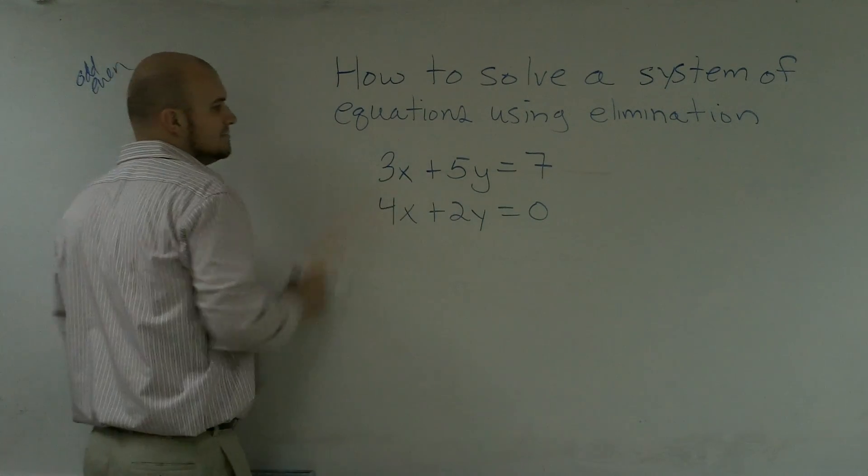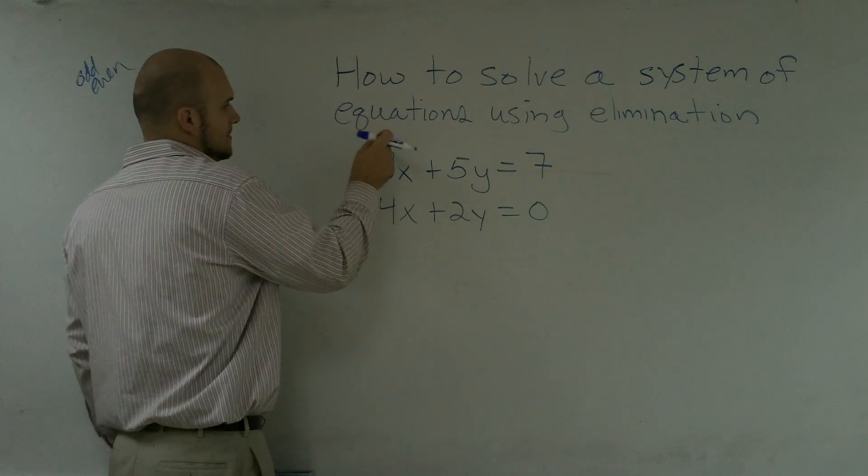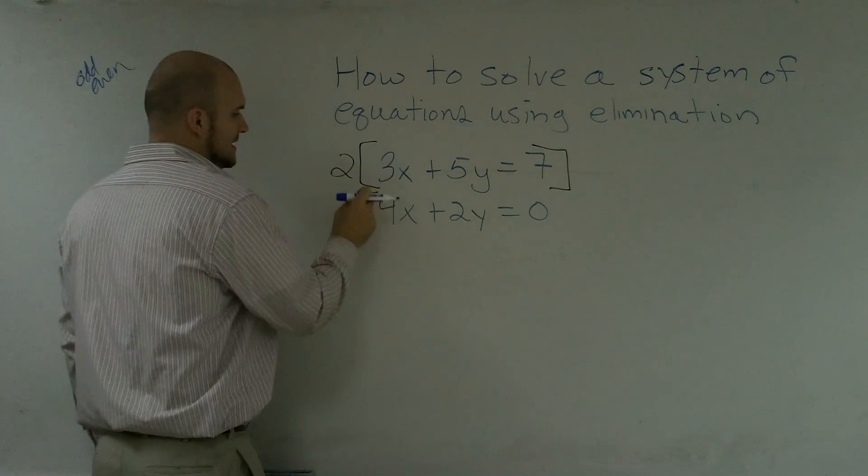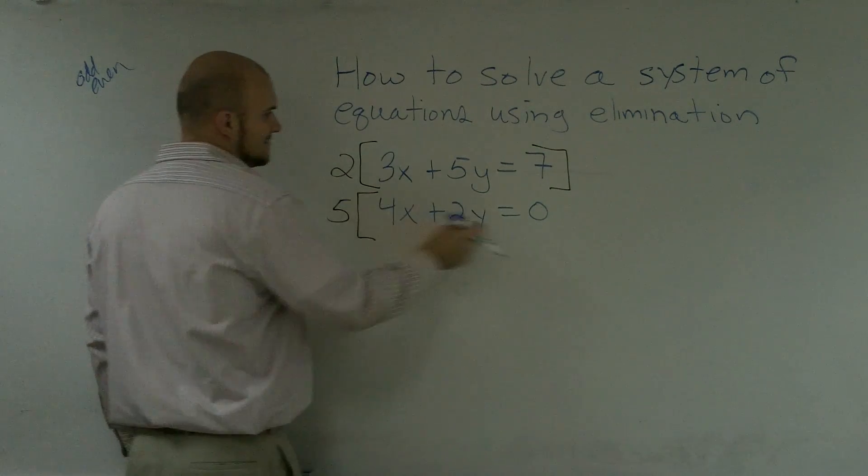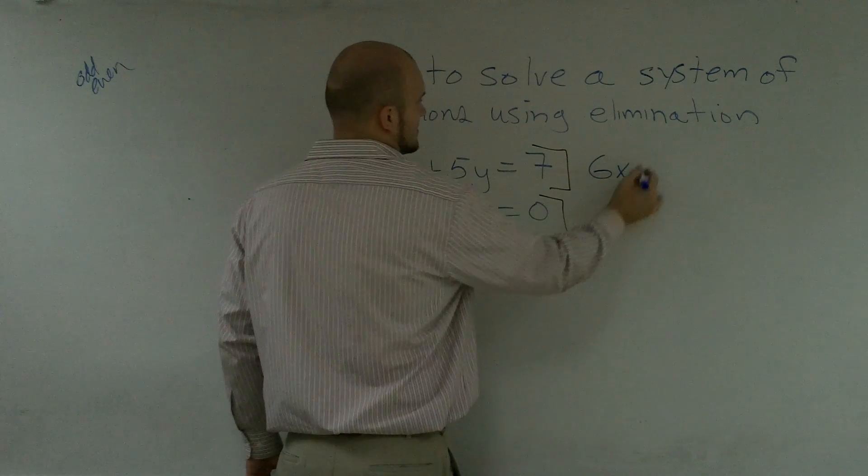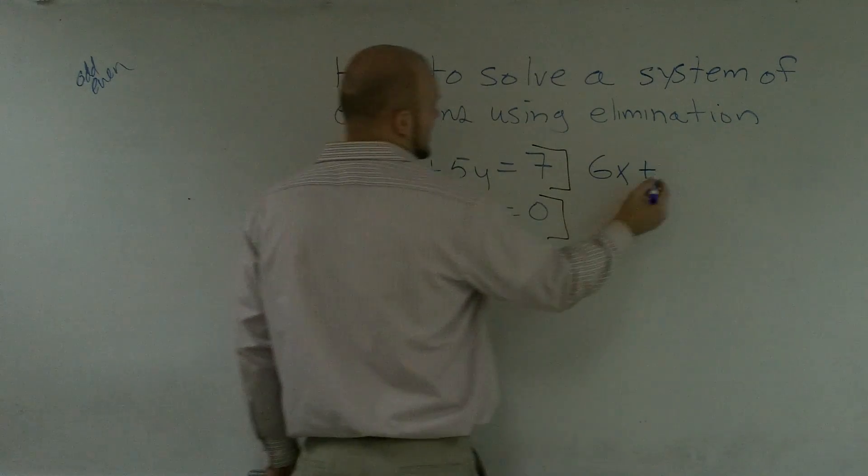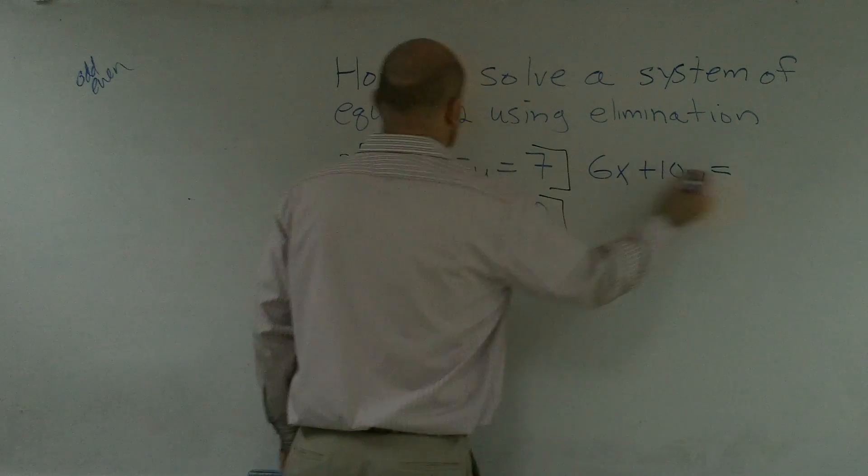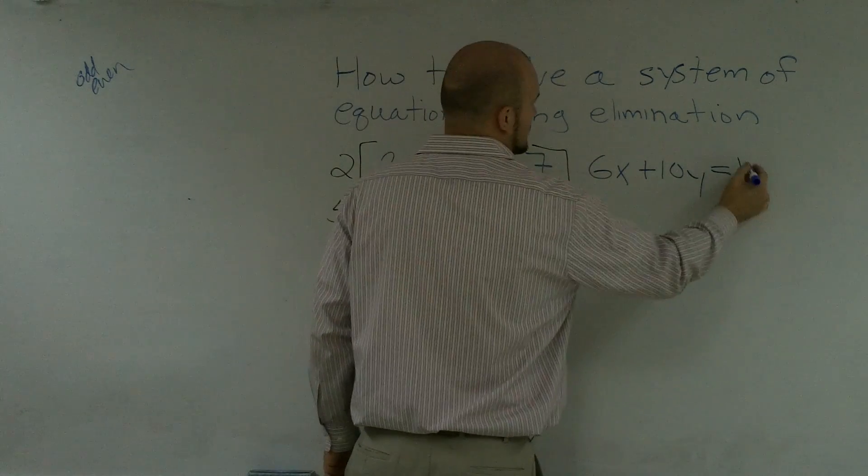So to get this to be 10, I need to multiply this whole equation by 2. When I do that, 2 times 3 equals 6x plus 2 times 5 equals 10y equals 2 times 7 equals 14.